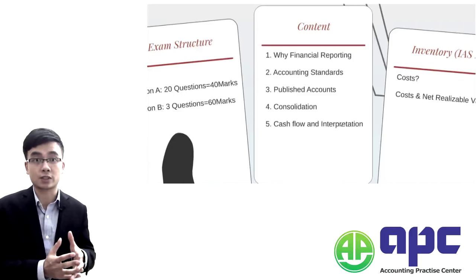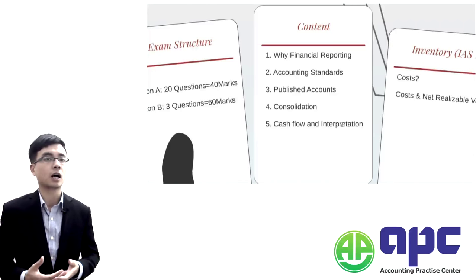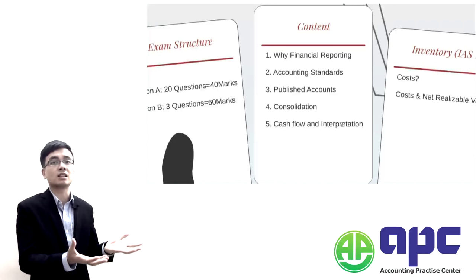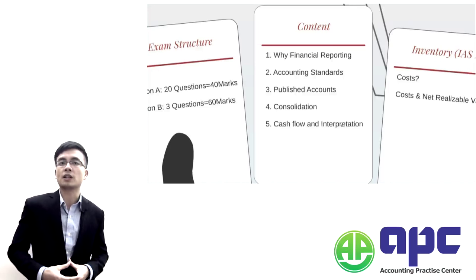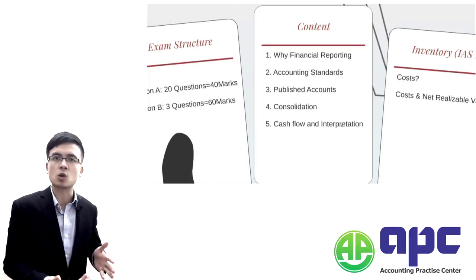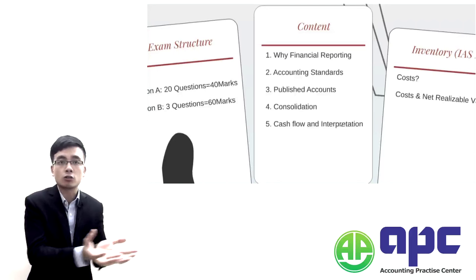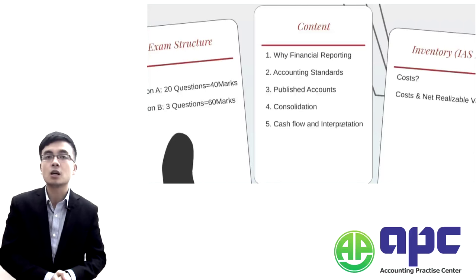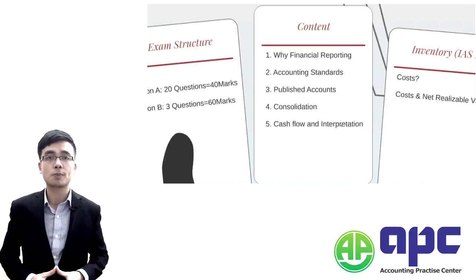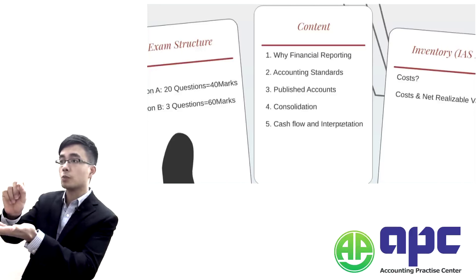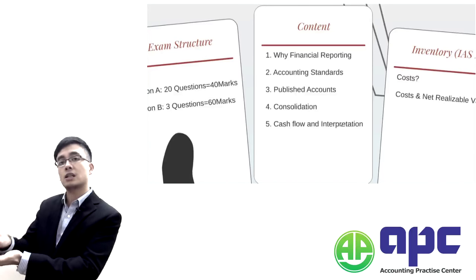For example, we decide to invest $10 million into buying property, plant and equipment to become a market leader in our industry — that's a management activity related to strategy. As financial accountants, we record those activities: we debit the PPE (the machinery) by $10 million and credit the cash from our bank by $10 million.